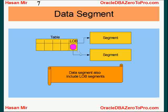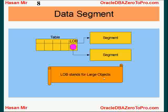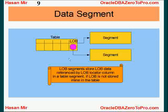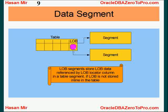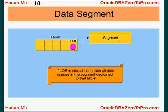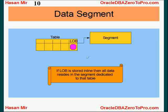LOB values are very large — for example, a whole Word document can be a LOB, a whole Excel sheet can be a LOB. They could go into gigabytes. So you can optionally choose to store them in a separate segment. LOB segments store LOB data referenced by a LOB locator column in a table segment. If the LOB is not stored inline in the table, you can optionally store it in a separate segment. You can also choose not to have a separate segment for LOB, in which case the LOB value will go in the same original segment that belongs to the table. Either way, LOB segments belong to the data segment type.